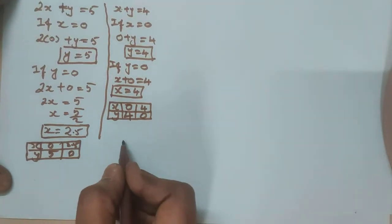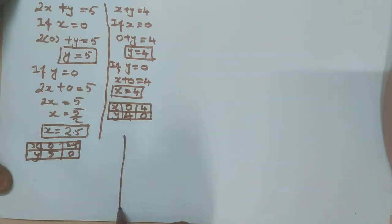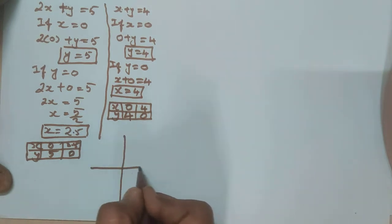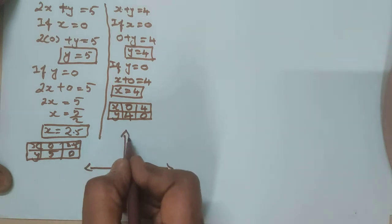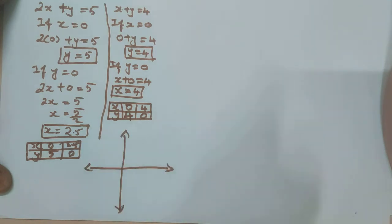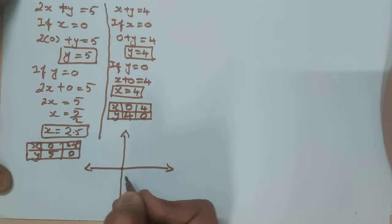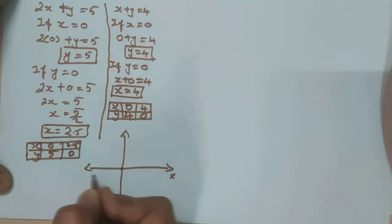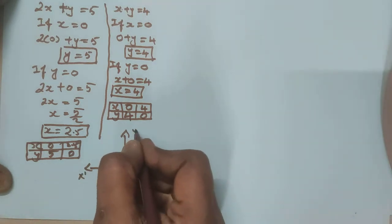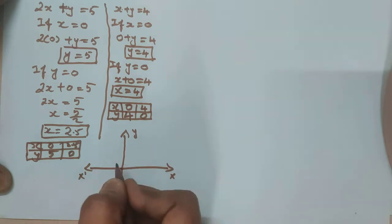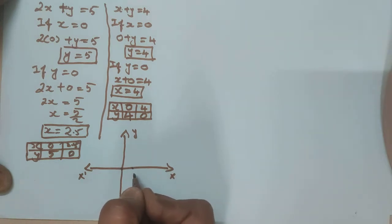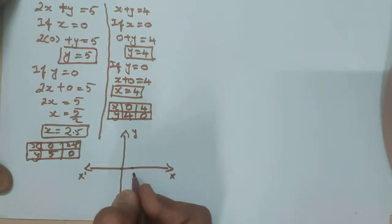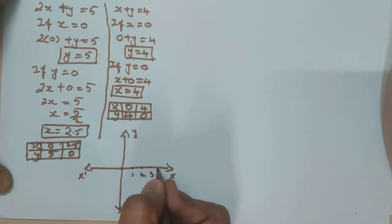You should plot the points in the graph. I will do a rough one here. Please draw on a graph sheet and check it. The center point is 0. This is x, x-dash, y, y-dash. Each 1 cm. Let me mark 1, 2, 3, 4, 5 on the x-axis.